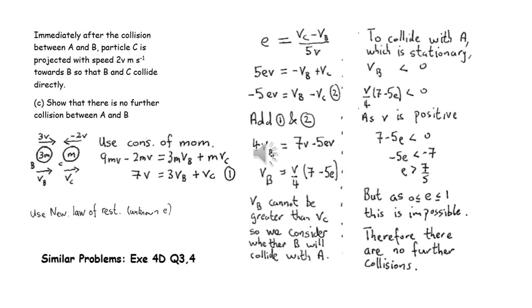We first of all need to consider the collision between B and C, and we need to be able to work out the velocity of B after that collision. We can apply conservation of linear momentum and Newton's experimental law to get an expression for the velocity of B after this collision between B and C.